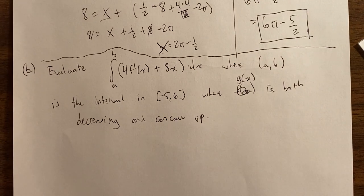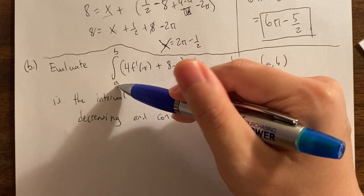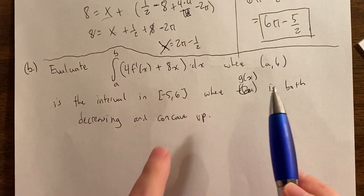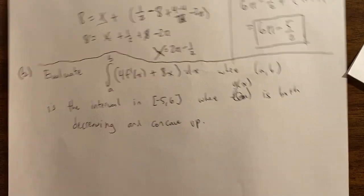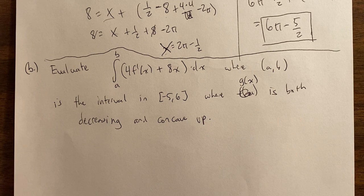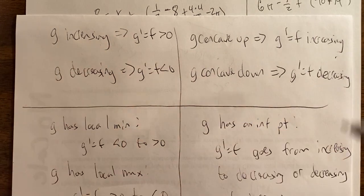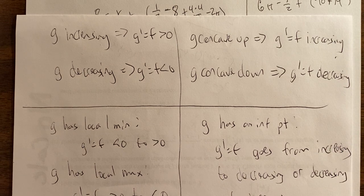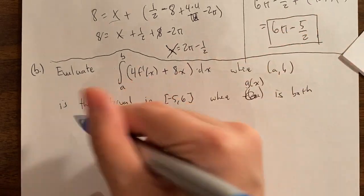The next question is a little bit harder, but we're going to do it. We need to evaluate an integral on the interval where g of x is both decreasing and concave up. So I first need to find this mysterious interval, then take the integral. These are my shapes and curves questions — the rules I've been writing throughout all these videos.